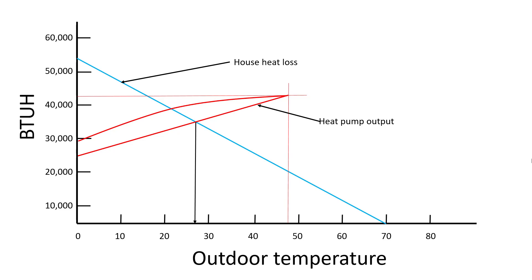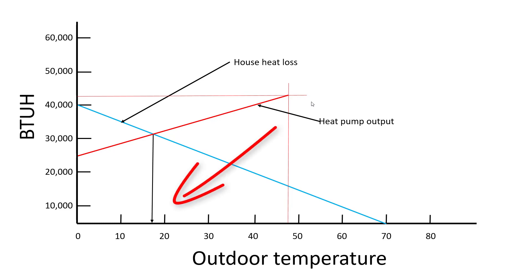It would change if the house is tighter, better insulated, there's less heat loss. Those numbers would change. The heat loss for the house would look more like this where we're only losing say about 31 or 32,000 BTUs at 20 degrees. Then our balance point shifts down.